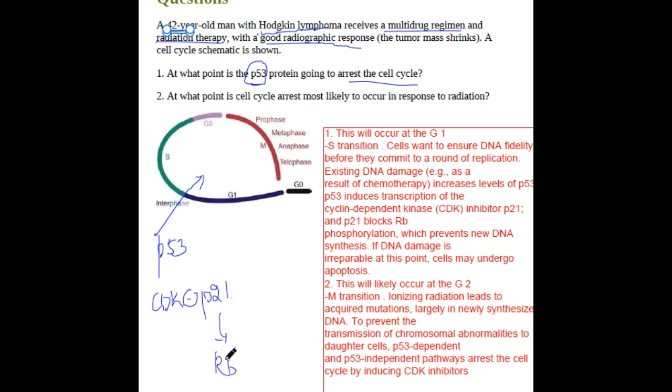Then, at what point is cell cycle arrest most likely to occur in response to radiation? In response to radiation, it occurs mainly at the G2/M phase of the cell cycle. Thank you for watching.